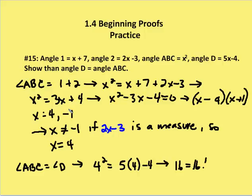This is equal to 5 times 4 minus 4, which is also equal to 16. So I can see, then, that angle ABC, in fact, does equal angle D, and that both of the measures are 16 degrees.